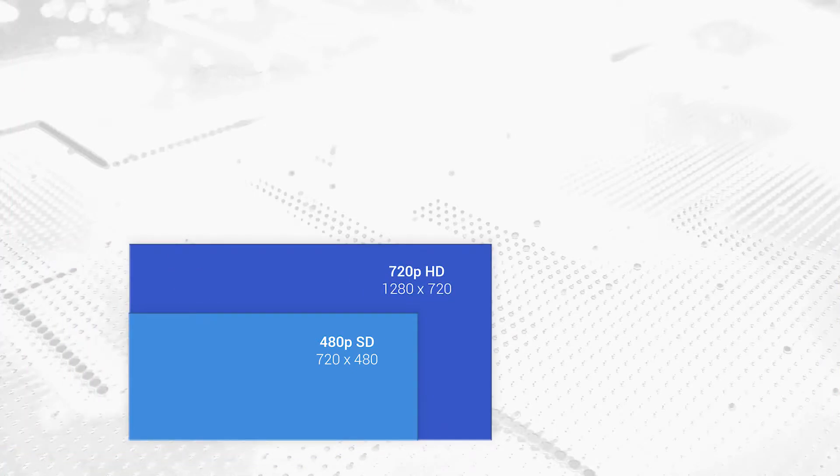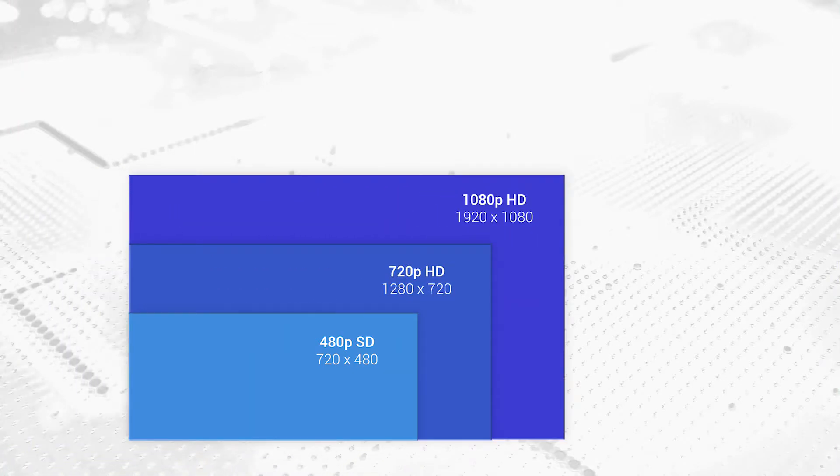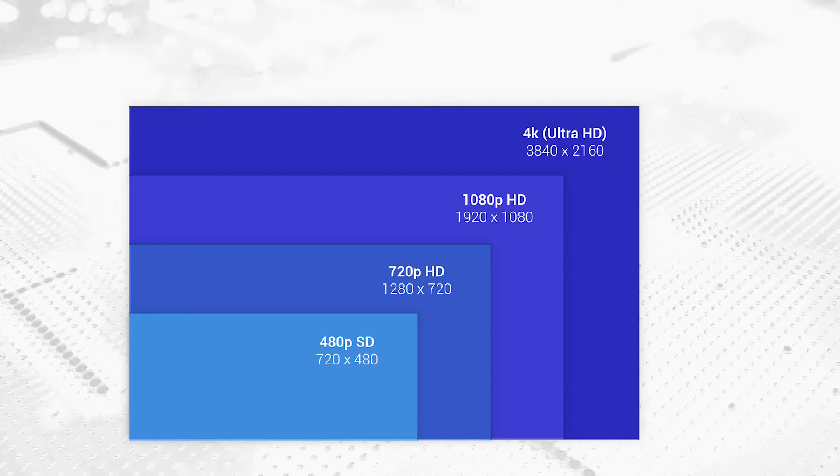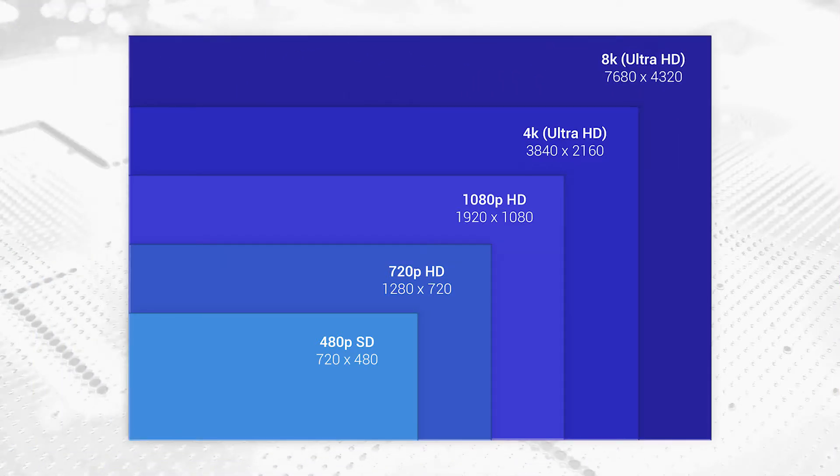These videos are actually composed of a series of pictures. Each of these pictures is called a frame. The size of a frame is known as a resolution, which defines how many pixels are in a picture. Some examples you are probably familiar with are 1280 by 720, 1920 by 1080p full high-definition video, and 3840 by 2160, also known as 4K.